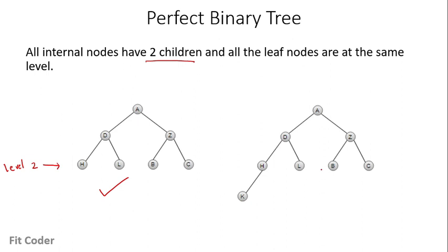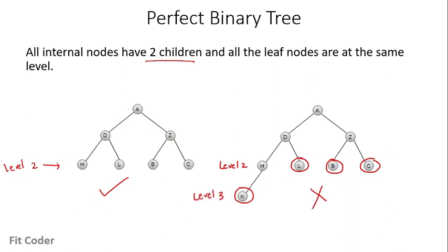In the second case, K is a leaf node, L is a leaf node, and B and C are also leaf nodes, but they are at different levels. B and C are at level two and K is at level three. So this is not a perfect binary tree.